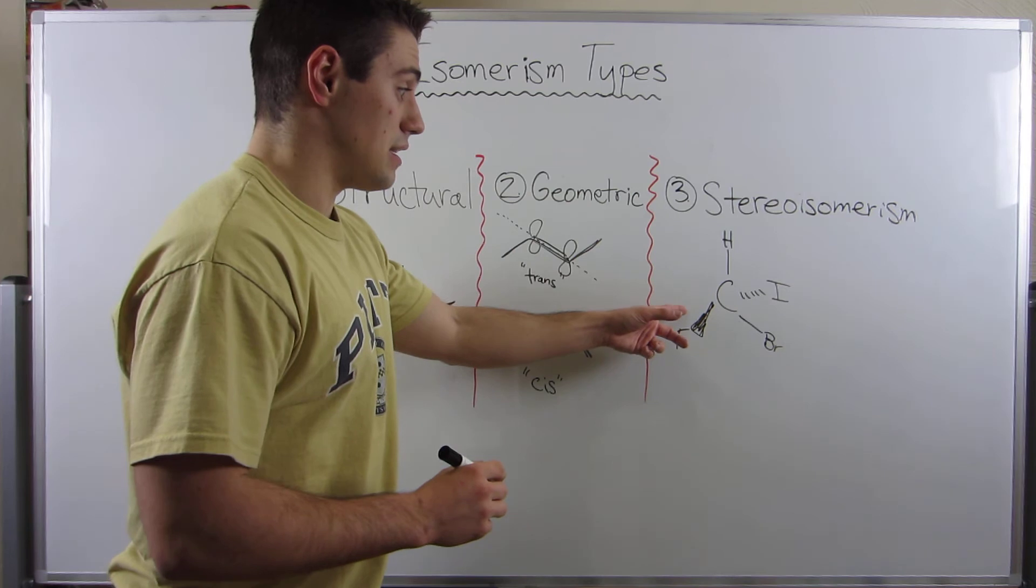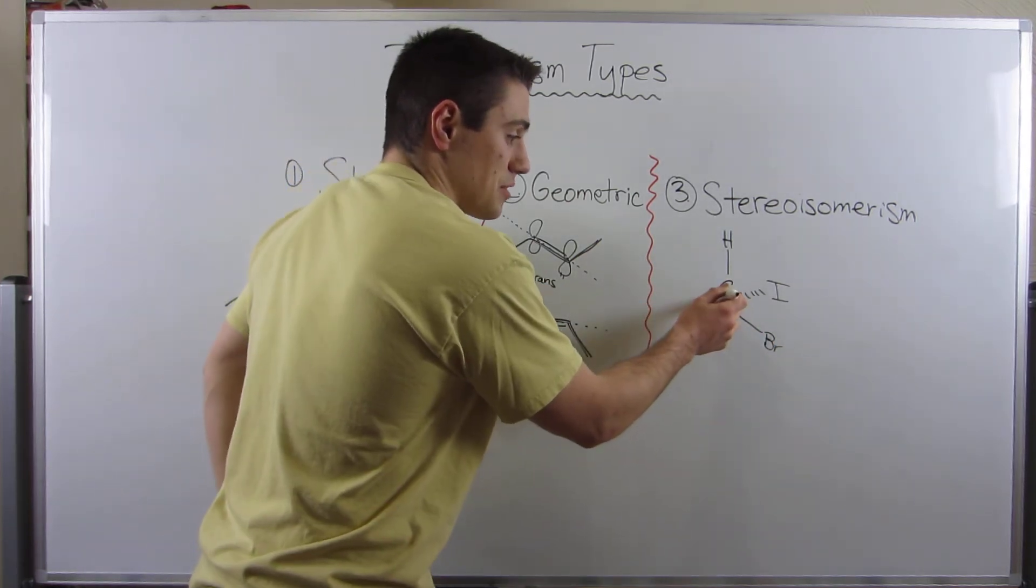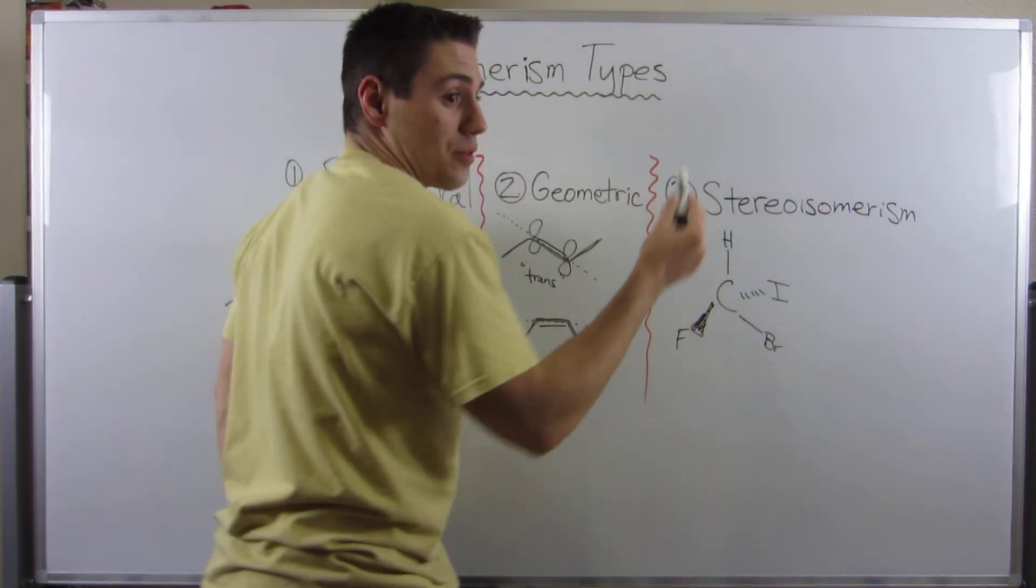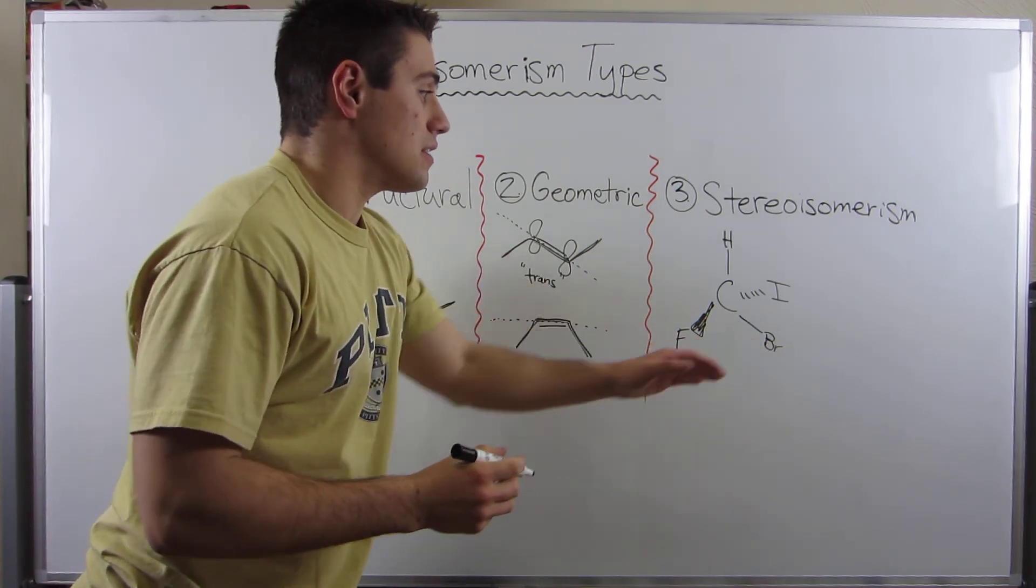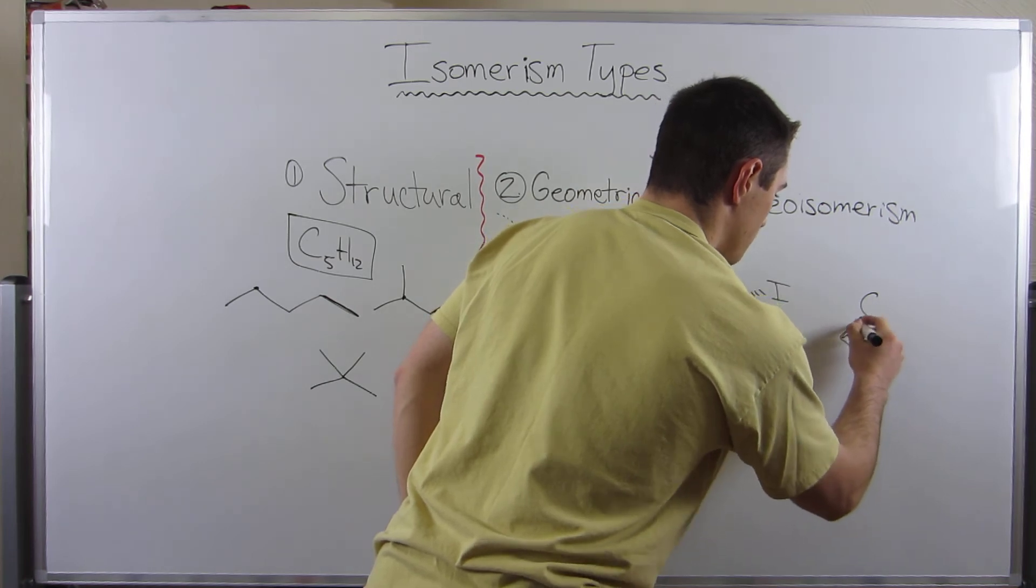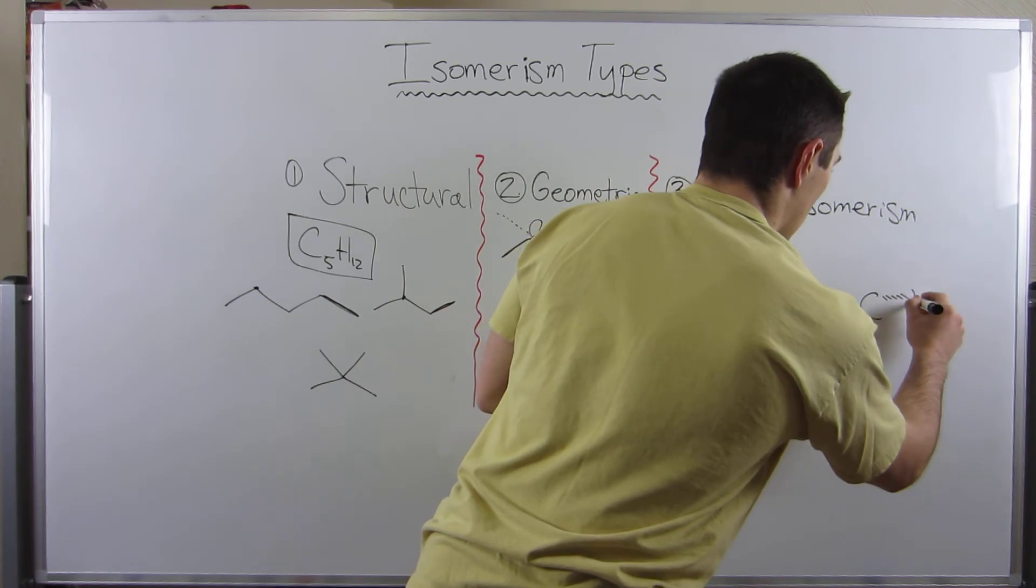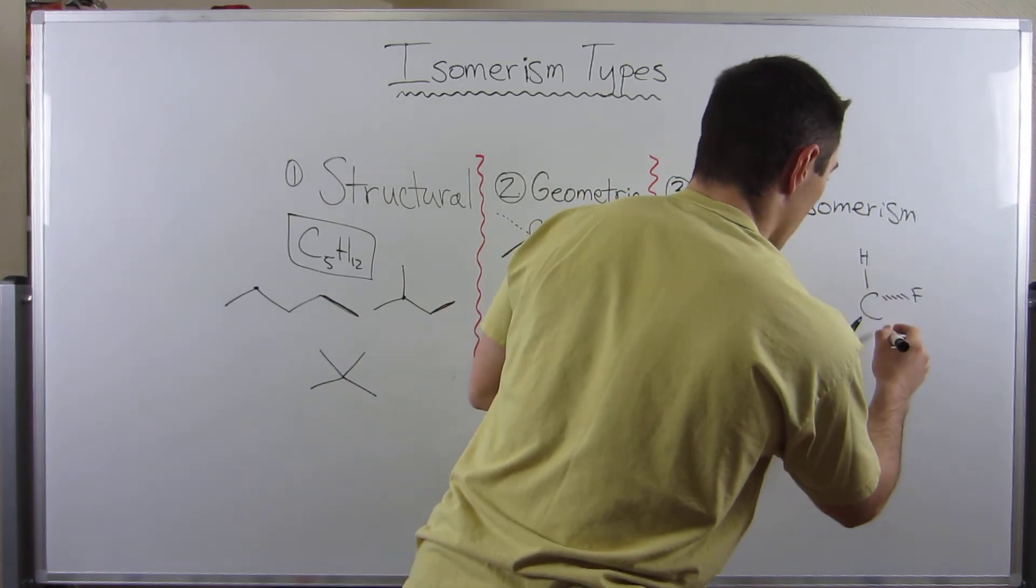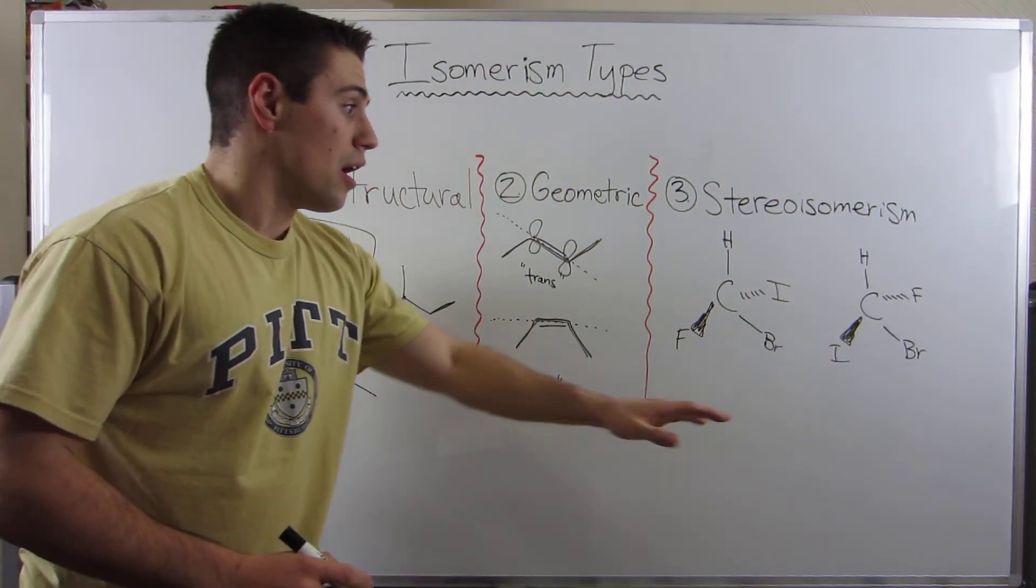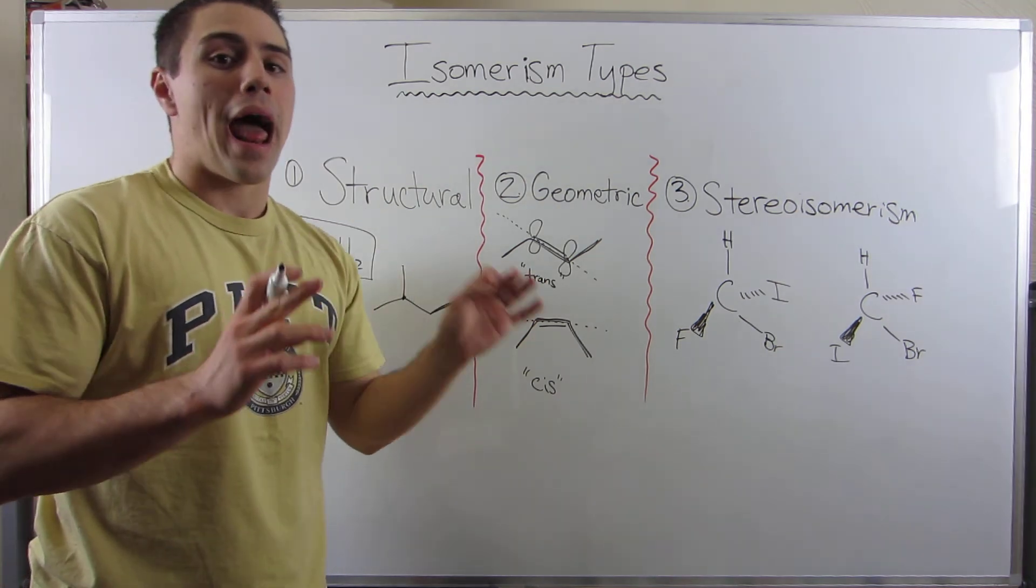Remember, we looked at these dashes and wedges before, right? Wedges indicate something's coming out of the plane of the paper or board, and these dashes indicate that they're going through the board, right? Well, if I have this, I could draw something like this. I could switch the iodine and the fluorine, and I'm going to tell you, gang, that this is now a different isomer of this guy, different stereoisomer. These are not the same. They can have radically different properties.